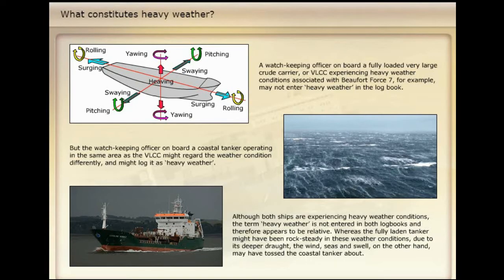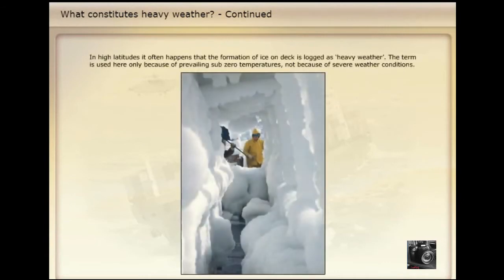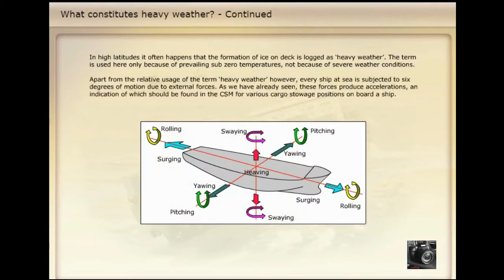Although both ships are experiencing heavy weather conditions, the term heavy weather is not entered in both logbooks, and therefore appears to be relative. Whereas the fully laden tanker might have been rock steady in these weather conditions due to its deeper draft, the wind, seas and swell, on the other hand, may have tossed the coastal tanker about. In high latitudes, it often happens that the formation of ice on deck is logged as heavy weather, only because of prevailing sub-zero temperatures, not because of severe weather conditions.